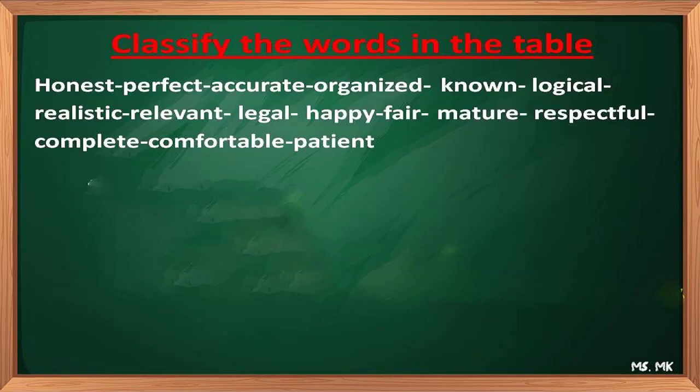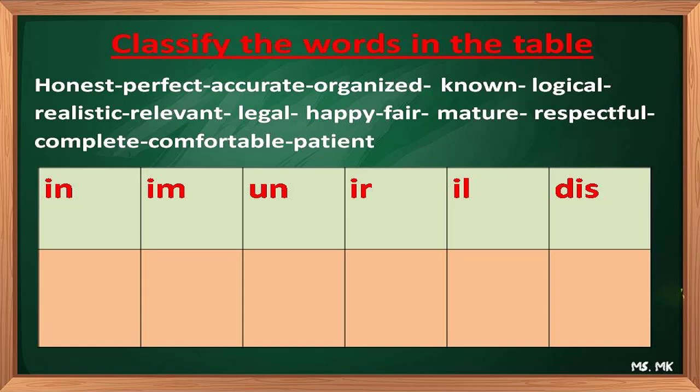Let's classify the words in the table to understand better. Here you've got: honest, perfect, accurate, organized, known, logical, realistic, relevant, legal, happy, fair, mature, respectful, complete, comfortable, and patient. You've got six prefixes. You just have to classify the words in the table according to their prefixes.